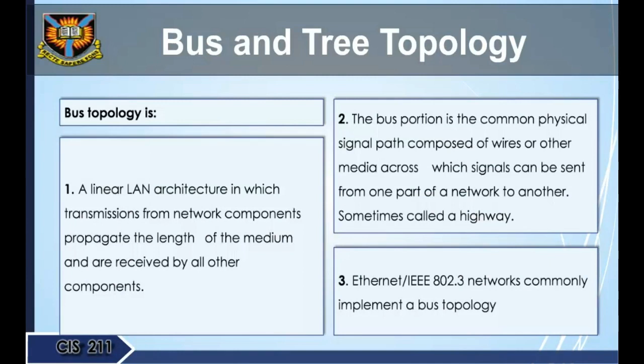Bus topology is a linear LAN architecture in which transmissions from network components propagate the length of the medium and are received by all other components. The bus is the common physical signal path composed of wires or other media across which signals can be sent from one part of a network to another — sometimes called a highway. Ethernet / IEEE 802.3 networks commonly implement a bus topology.